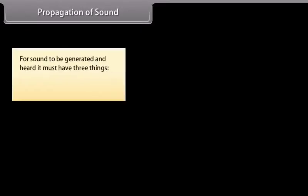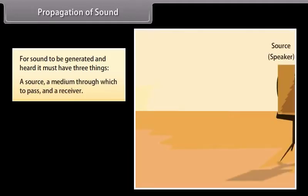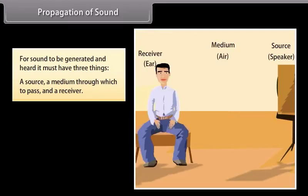Propagation of sound. For sound to be generated and heard, it must have three things: a source, a medium through which to pass, and a receiver. Let us assume the source is the speaker's voice, the medium through which it is transmitted is air, and the receiver is the listener's ear.